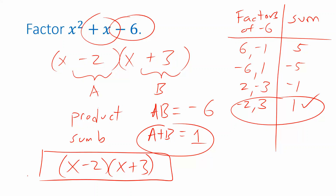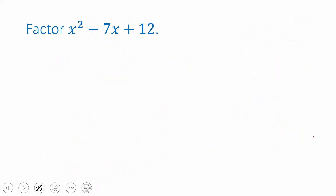You can check with the previous example, because this is that same problem in reverse. Now let's try this approach on another one. I want to factor x squared minus 7x plus 12. I already know I need numbers that add to negative 7 and multiply to give 12.